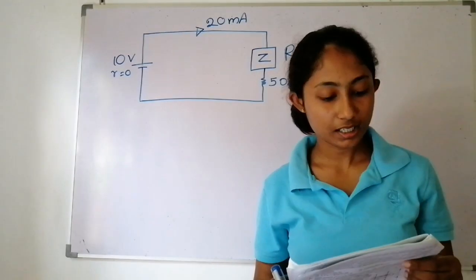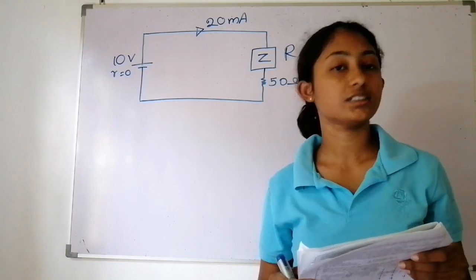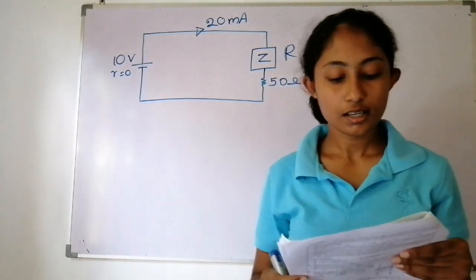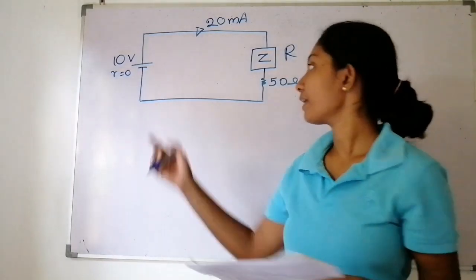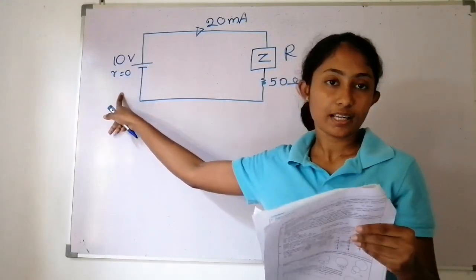We will solve this circuit problem step by step. This circuit has a voltage source of 10V. We need to find the resistance R in this circuit.